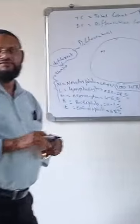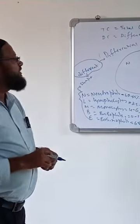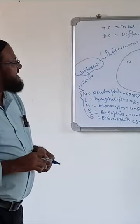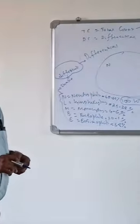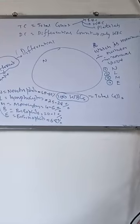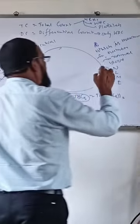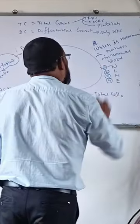What is the answer? Which is maximum in number in normal blood? The answer is neutrophils.